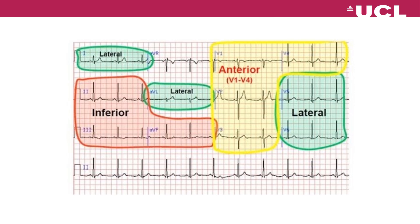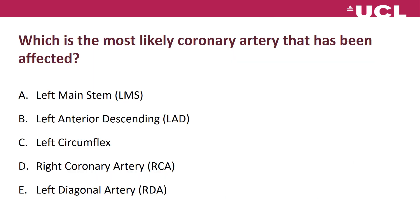On the 12-lead ECG, the territories are divided as follows: lateral MI corresponds to leads I, AVL, V5, V6; inferior MI to leads II, III, and AVF; and anterior MI to V1 to V4. This is a simple scheme to help you identify roughly where the patient's myocardial infarction might be.